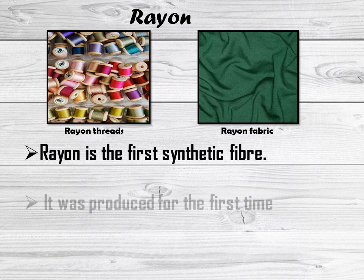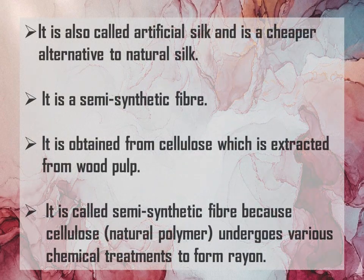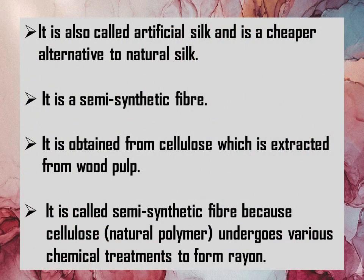Rayon is the first synthetic fiber. It was produced for the first time in France in the 1880s. It is also called artificial silk and is a cheaper alternative to natural silk. It is a semi-synthetic fiber obtained from cellulose, which is extracted from wood pulp. It is called semi-synthetic because cellulose, a natural polymer, undergoes various chemical treatments to form rayon.